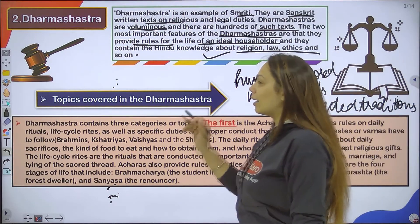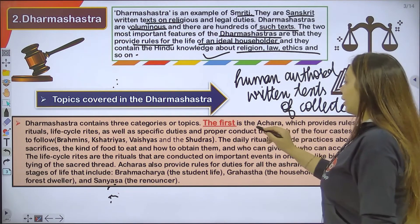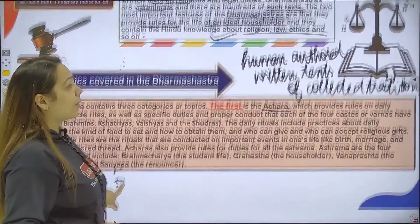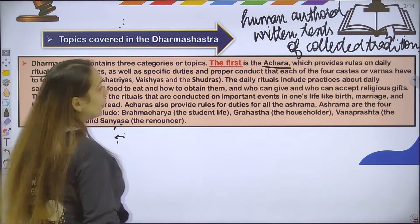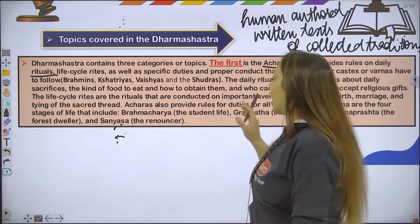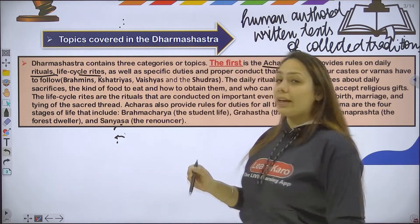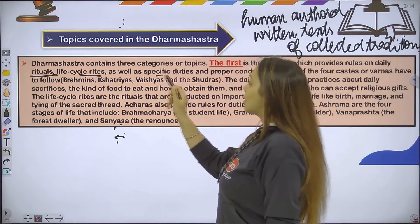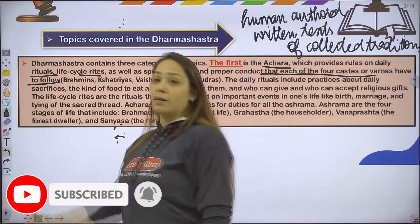So what are the topics covered in Dharm Shastra? There are three categories. The first category is Achara. We also studied in Dharm that there are customary laws. Achara provides rules for daily rituals — what rules and daily rituals you have to follow, like ritual purification, life cycle rites, religious work, ceremonial duties, specific duties, and proper conduct that each of the four castes must follow.